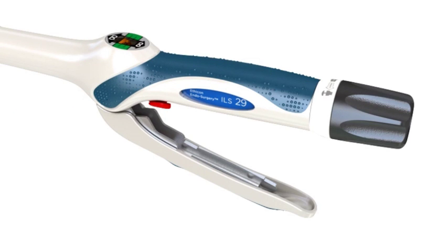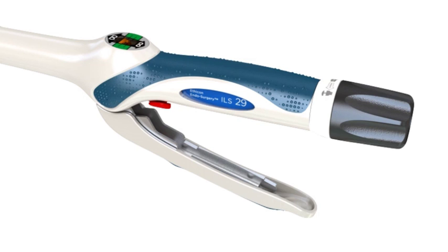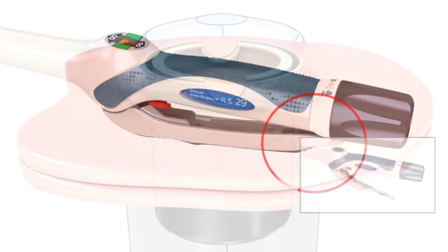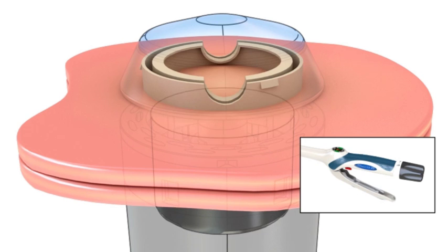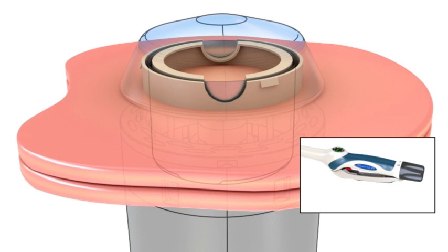Fire the device by continuously squeezing the firing trigger until it touches the device body. The user should notice audible and tactile feedback when cutting through the breakaway washer.